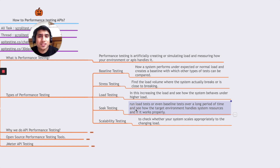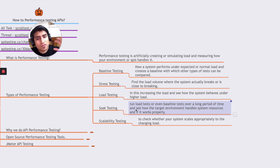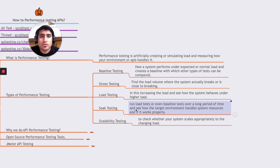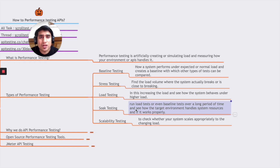Soak testing is when we run our performance test scenario over a long period of time. For example, if the server can handle a thousand requests per second, we keep sending that load for half an hour, six hours, or twelve hours, to check if resources get exhausted. Scalability testing checks whether your system scales when you immediately increase the load — whether your server infrastructure is scalable enough to handle lots of API requests.